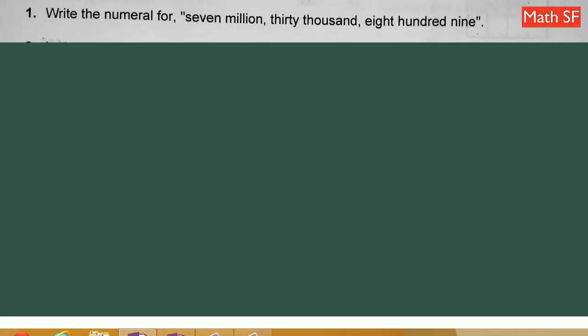Placement Desk Number 1, Chapter 1. Write a numeral for 7,030,809. Since we have three groups, 7,030,809 implies that you're going to have three commas.